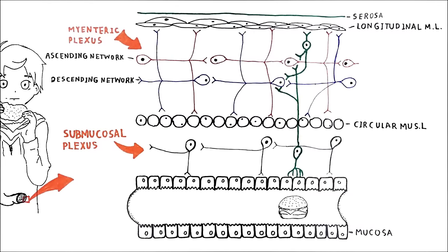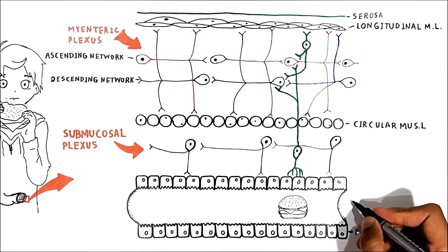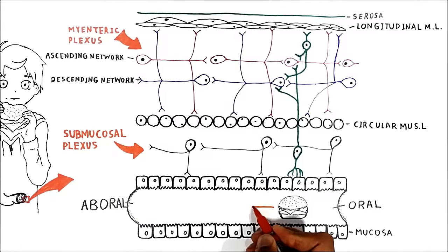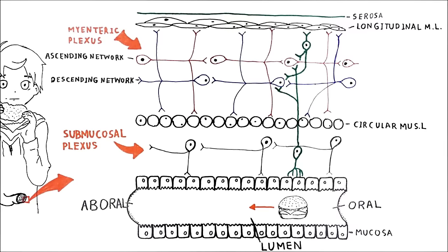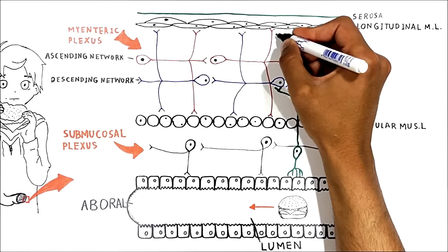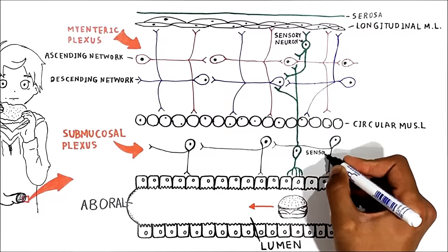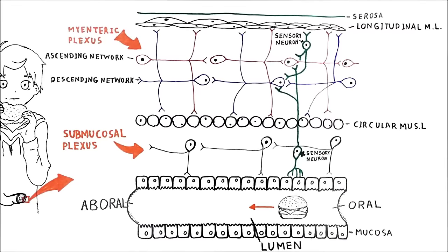Let's say this person has eaten a hamburger and a bolus has reached the small intestine. To understand how the enteric nervous system causes peristalsis, let's divide this part of the small intestine into two parts: oral and aboral. The bolus is traveling toward the aboral part from the mouth. In the small intestine, the bolus distends and stretches the intestinal smooth muscles. Intestinal distension stimulates the sensory neurons in the myenteric plexus, and sensory neurons in the submucosa are stimulated by the chemical composition of the food. Both sensory neurons give branches to the ascending and descending interconnecting neurons and stimulate them.